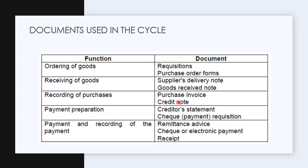For payment and recording, the documents involved are the remittance advice and the electronic payment or EFT. Checks are no longer being used — the banks discontinued them. So payment is either through EFT, and then you get your proof of payment or receipt to show that the payment was made.